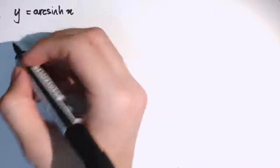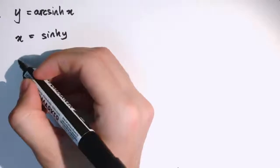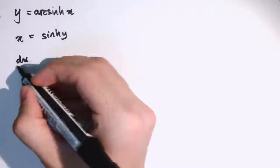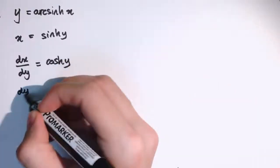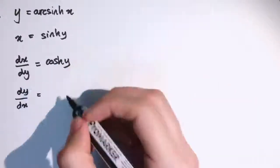To differentiate y equals arc sine x, we first write it as x equals sine y, and then differentiate with respect to y. So we get dx by dy equals cosh y, and by the result of differentiating inverse functions, dy by dx is 1 over dx by dy.